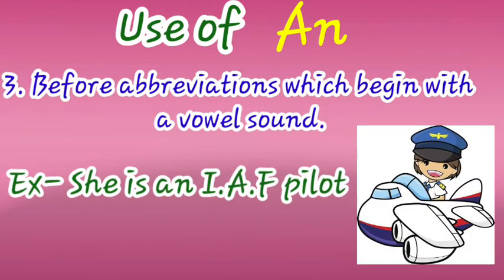The third use of 'an' is before abbreviations which begin with a vowel sound. Abbreviations are short forms. For example: 'She is an IAF pilot.' IAF is an abbreviation — its full form is Indian Air Force. The letter I gives a vowel sound, so before a vowel sound we use 'an.' Therefore, we use 'an' before IAF.